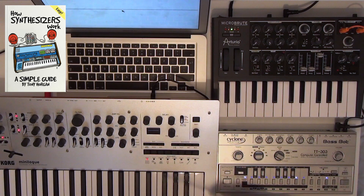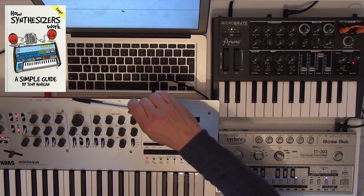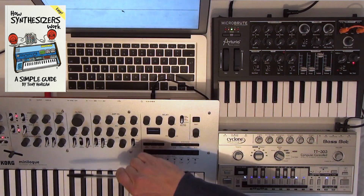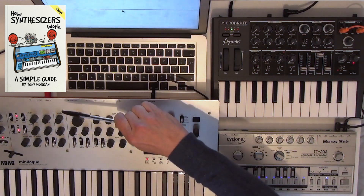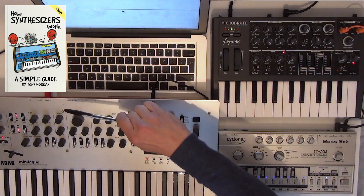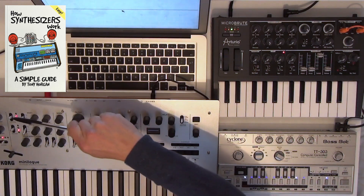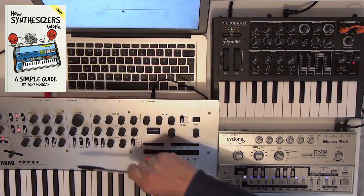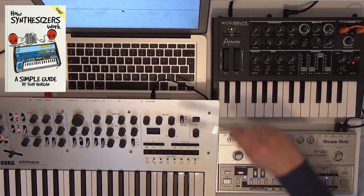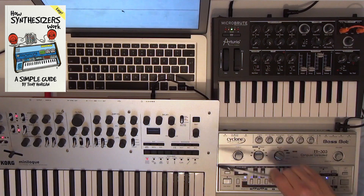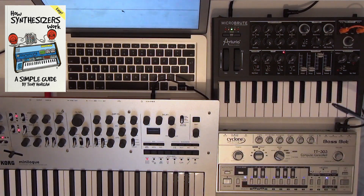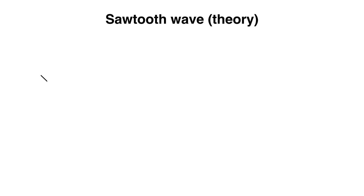If the oscillator moves down slowly and up quickly, over time it creates a sawtooth wave that looks like the teeth of a saw. In theory, the wave looks like this, and it sounds like this.